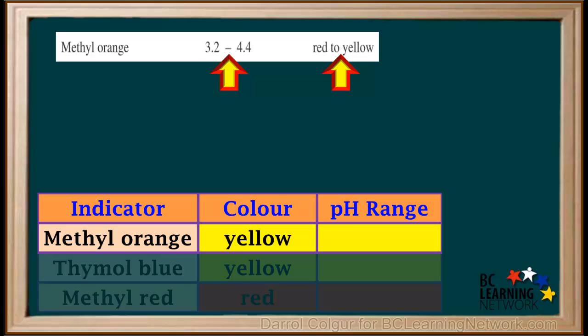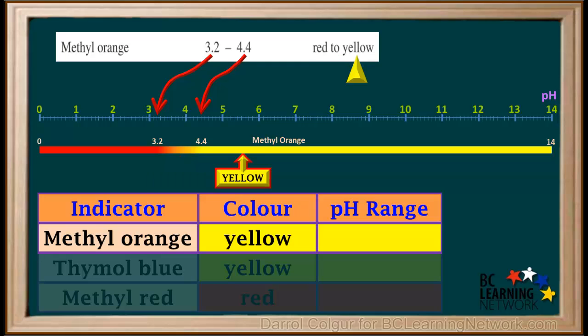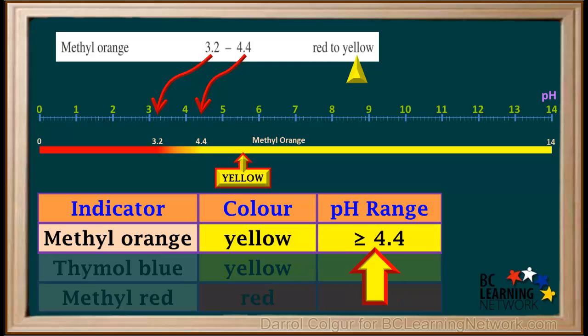We'll start with methyl orange. Its line on the indicator table tells us it changes from red to yellow as the pH increases from 3.2 to 4.4. So below a pH of 3.2, methyl orange is red. Between pH 3.2 and 4.4, it changes from red to orange to yellow as the pH increases. And above a pH of 4.4, it is yellow. The table tells us methyl orange is yellow in solution A, so the pH of solution A is greater than or equal to 4.4.